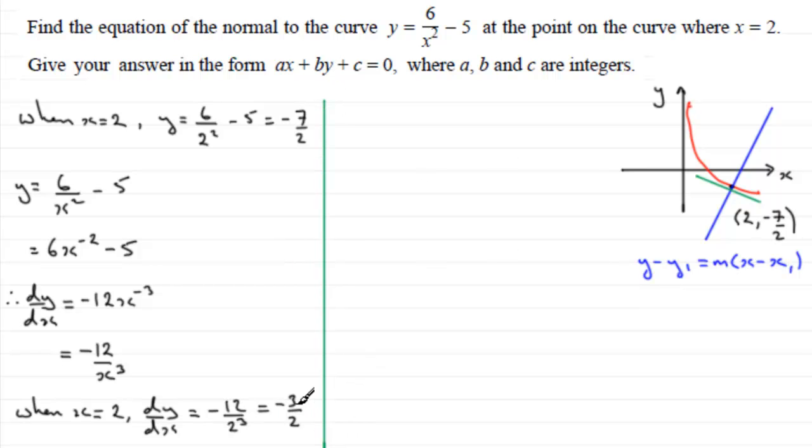Now, all I need to do now is get the gradient of the normal. So we can see that because the product of gradient should equal minus 1, we therefore got the gradient of the normal. I'll just put grad of normal, okay, for short. Well, all we do is switch the sign here and invert our fraction. So you're going to get plus 2 thirds. So that you can see the product of these two gradients is negative 1. The perpendicular gradient rule. So now I've got all the bits I need to get the equation of that normal.